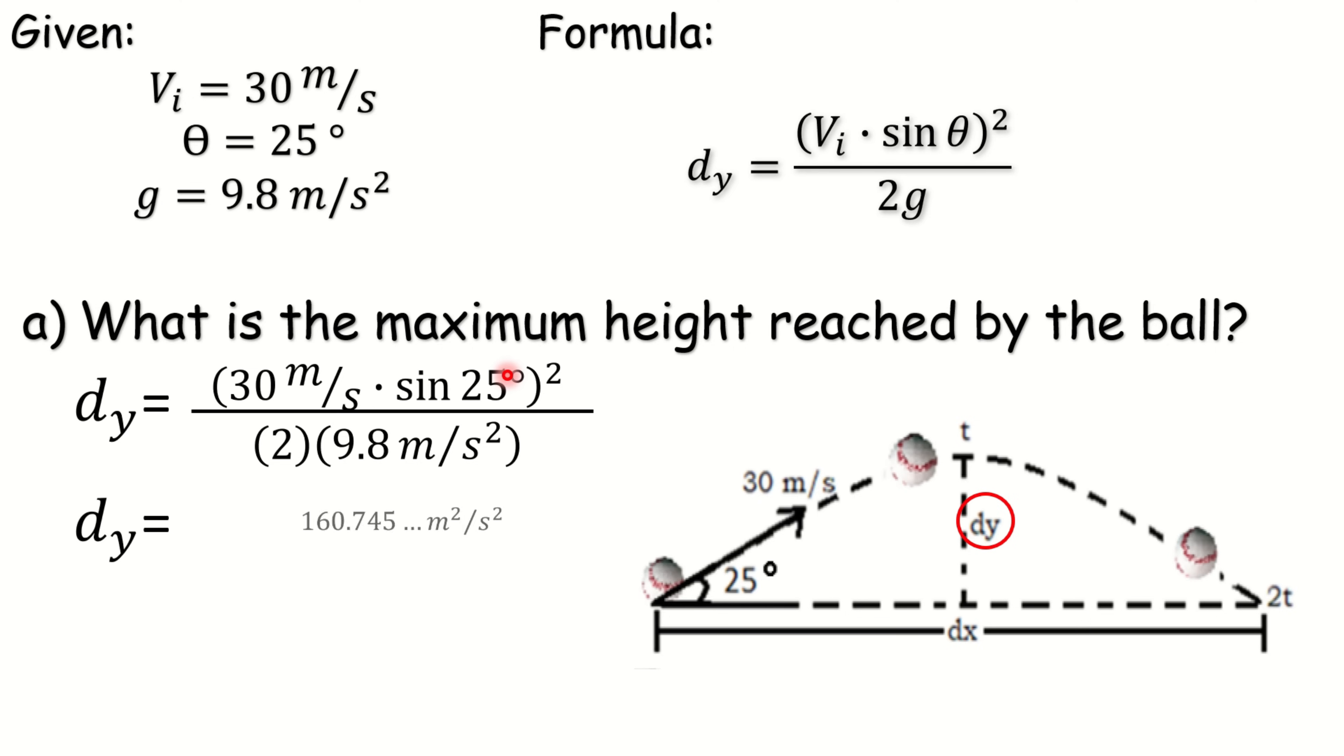We have the product of 160.745 meter squared per second squared divided by the product of 2 and 9.8 and that is 19.6 meter per second squared. Let us divide these two. The quotient, 8.20. And as you can see, we have to simplify the units. Let's cancel out. And the remaining unit is meter. Therefore, our final answer or the maximum height reached by the ball is 8.20 meters.